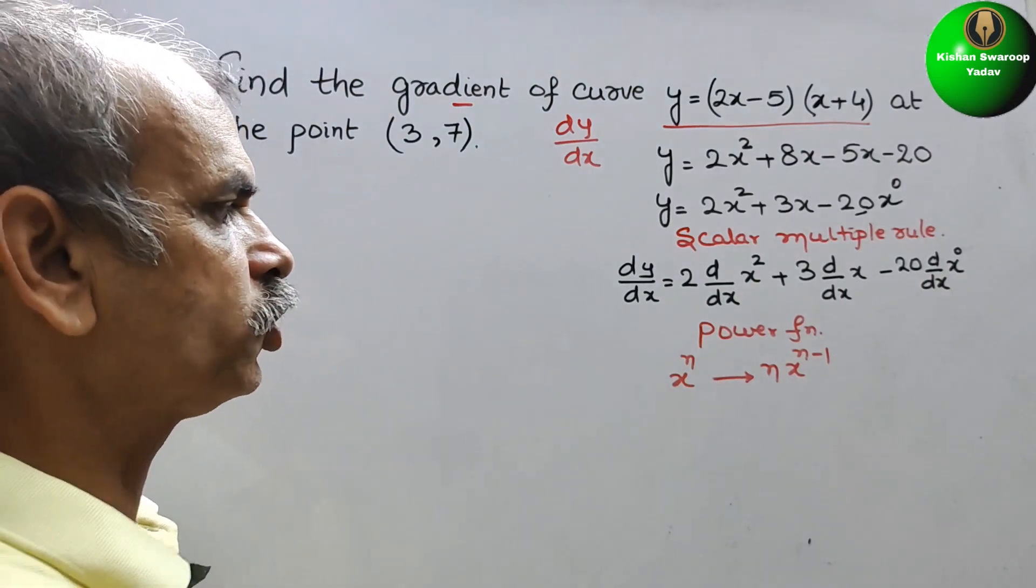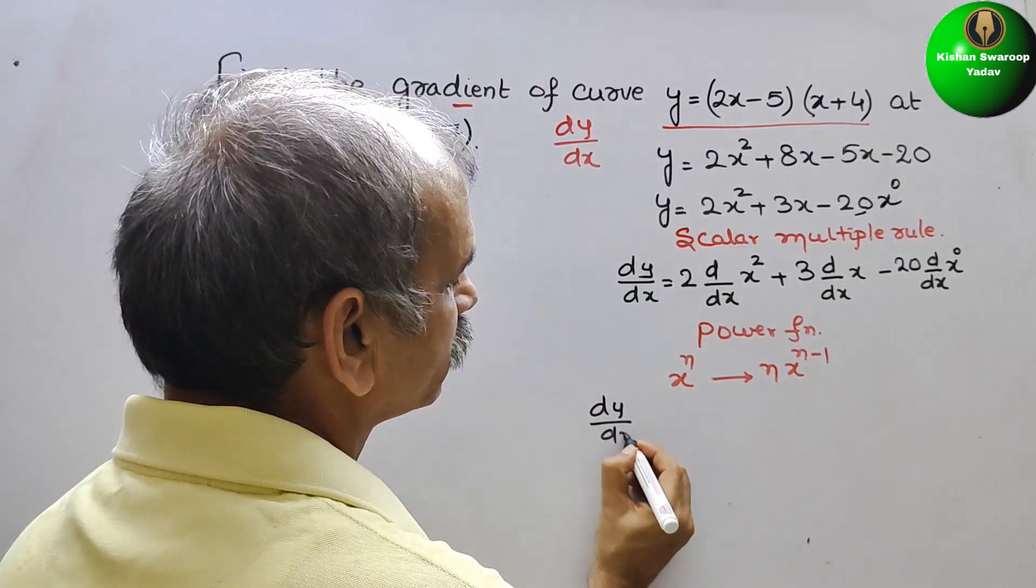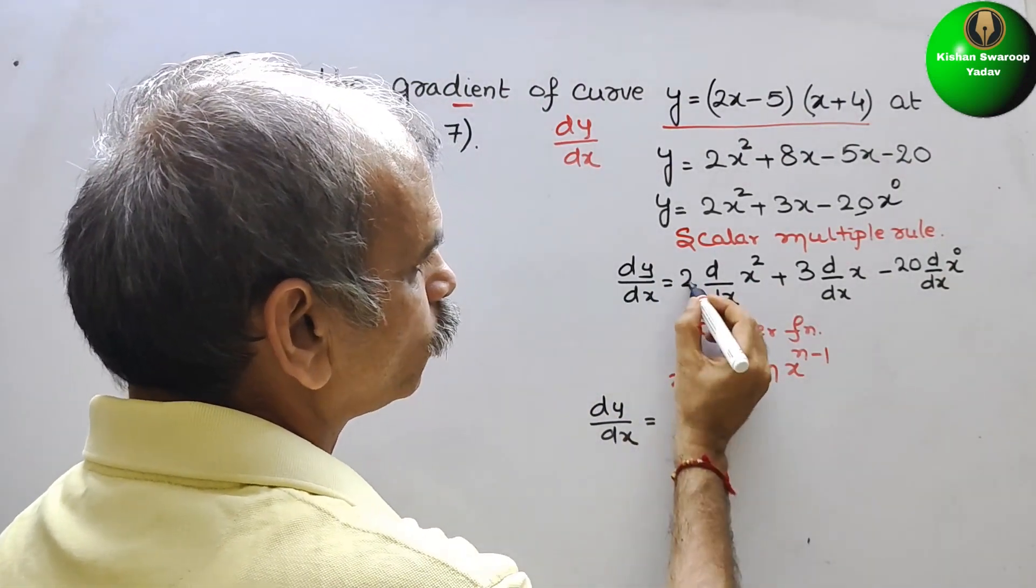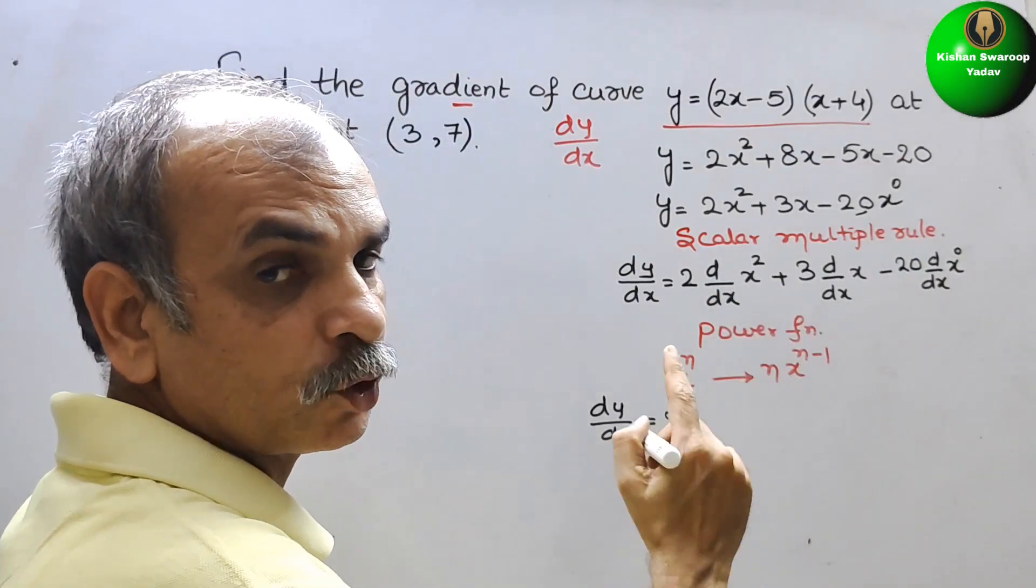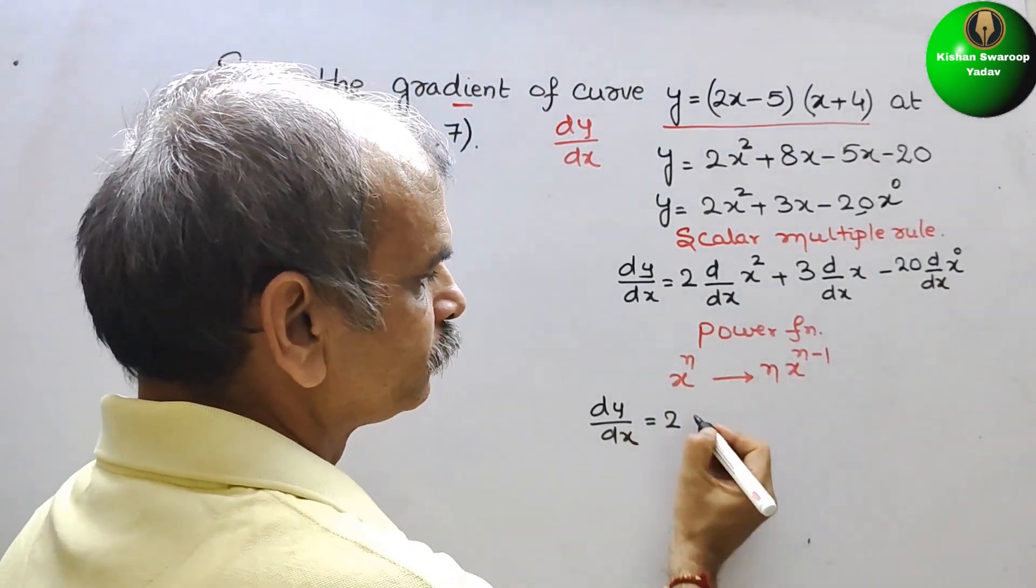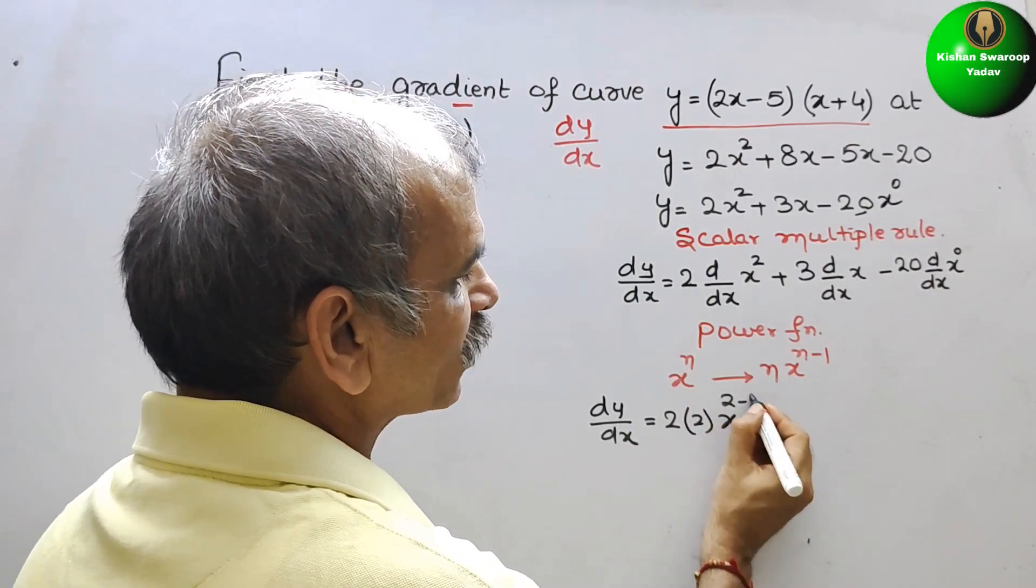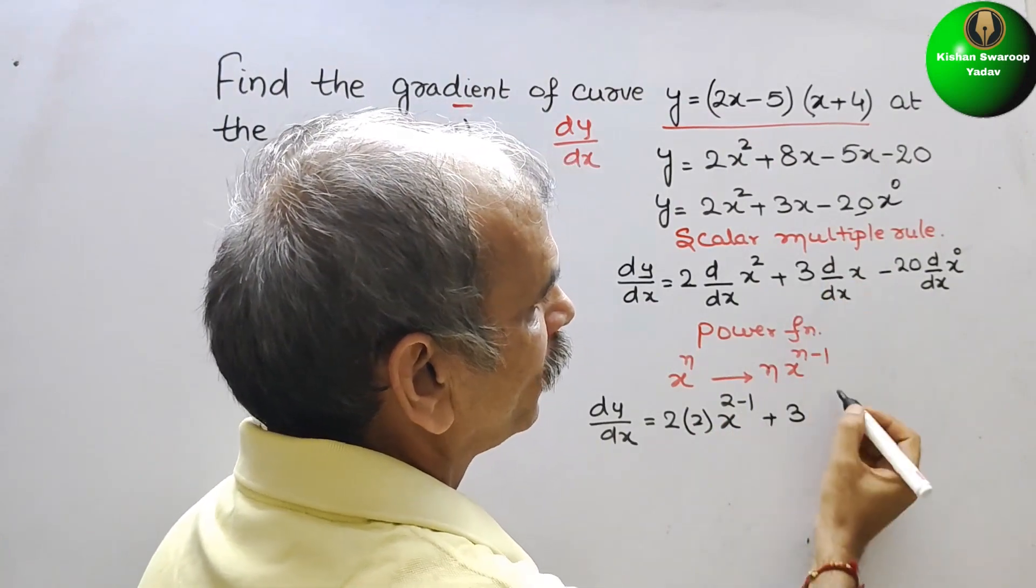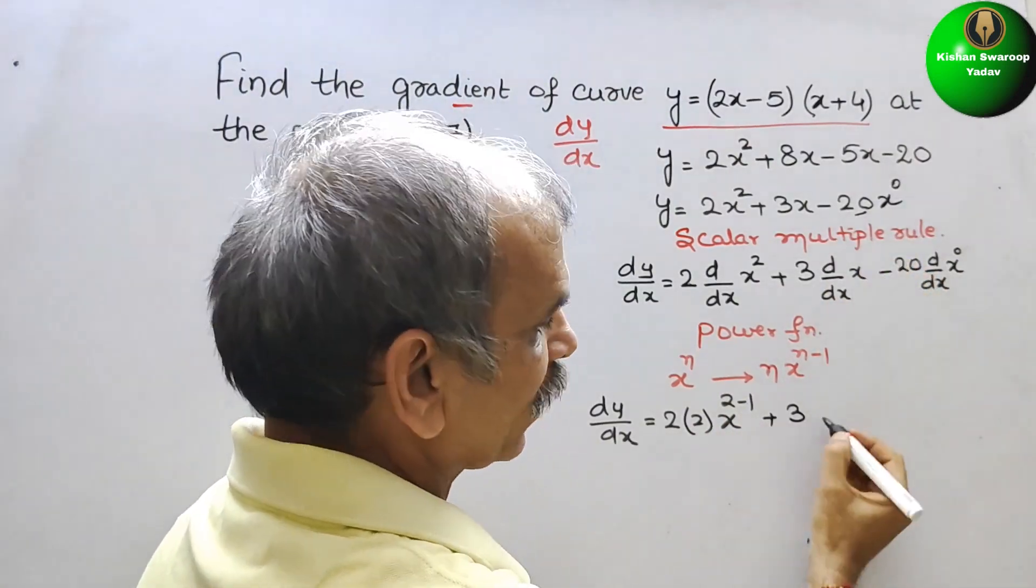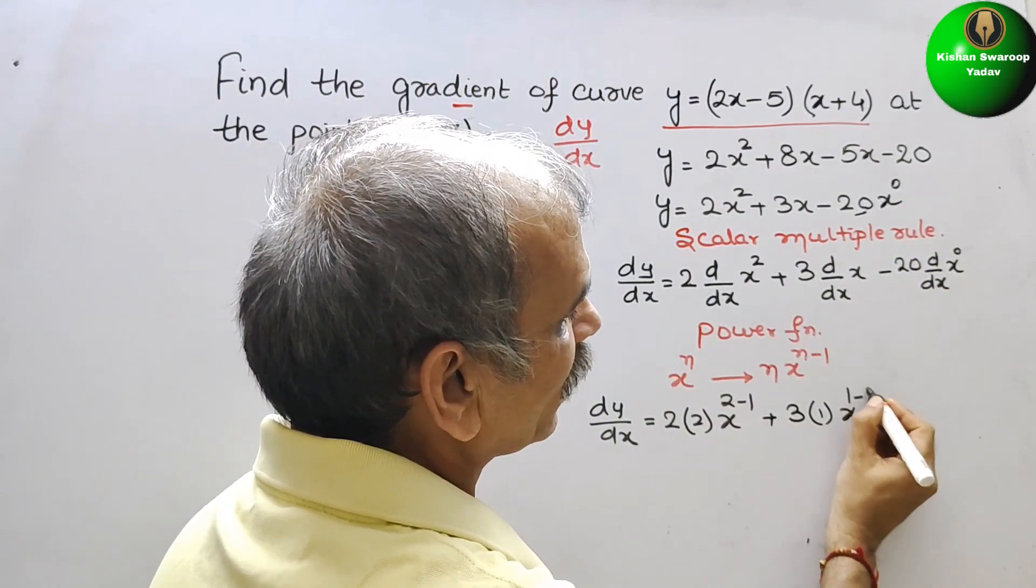So now we will solve it. So this will be your dy by dx is equal to 2. Here it is x square, so 2 is your n, and x to the power of 2 minus 1 plus 3. Here the power is 1, and x to the power of 1 minus 1.